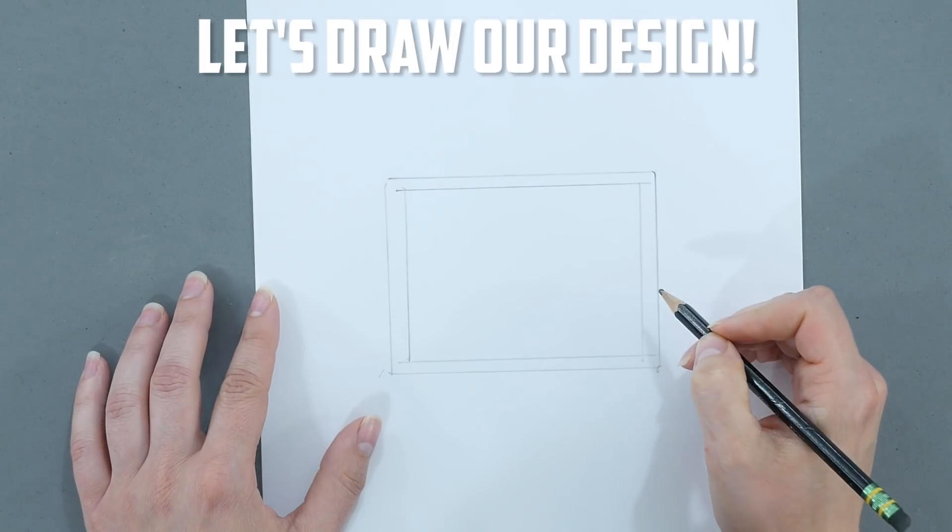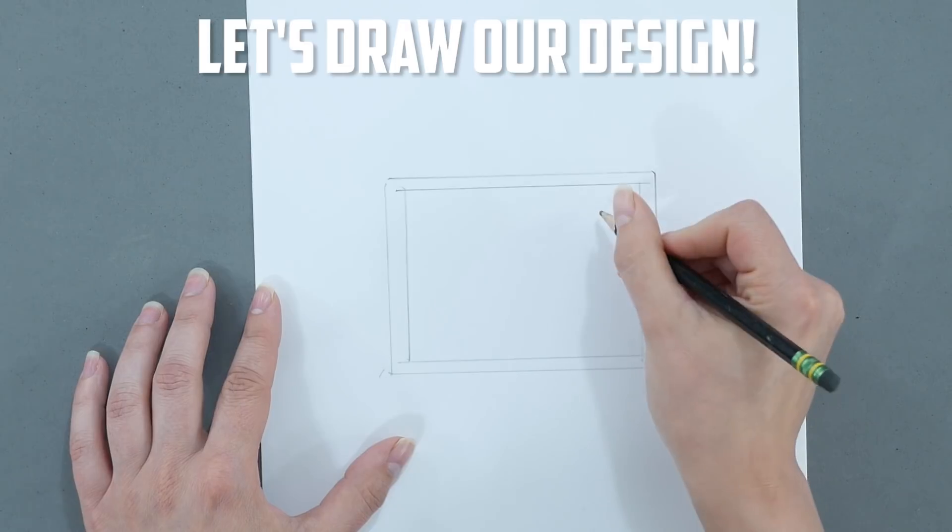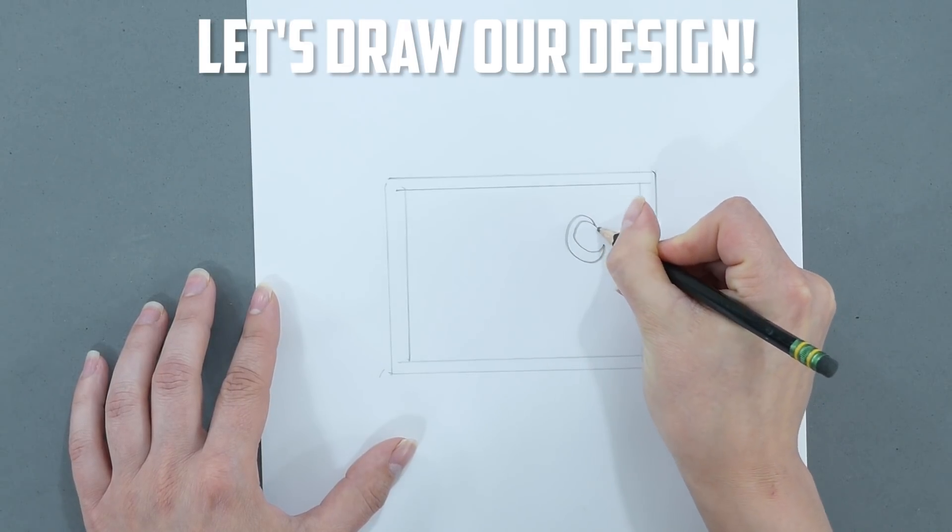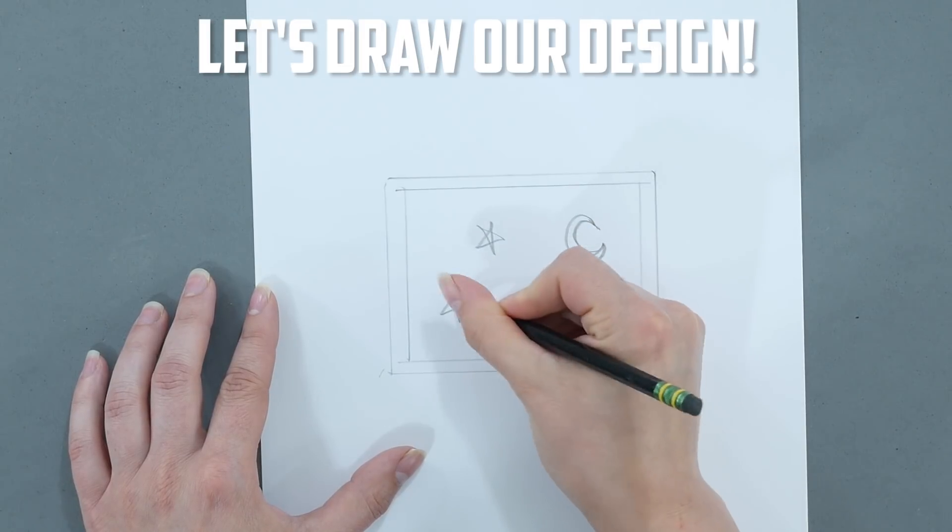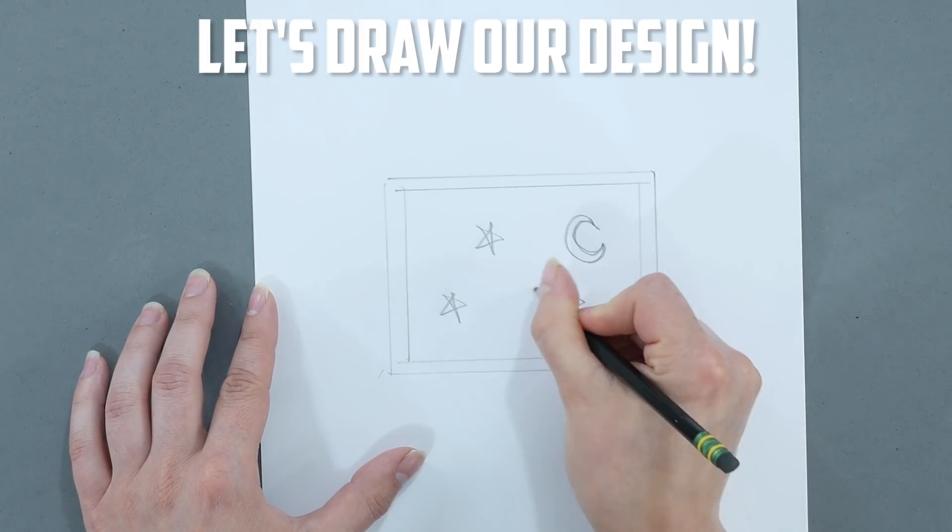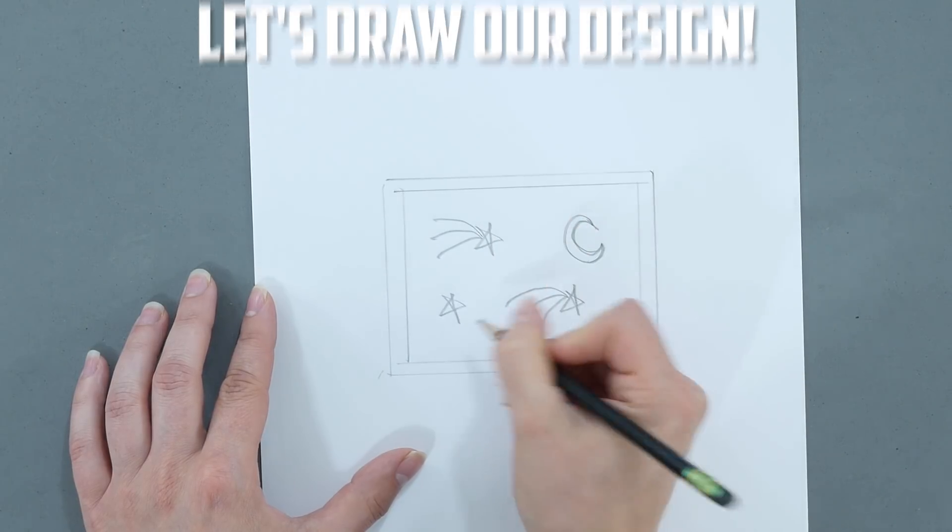When drawing your design you want to make sure that your lines are not going to be too thin because there will not be enough mass to catch the light significantly to really show off your design. So when you make your design you want to make sure that you're using nice bold lines.